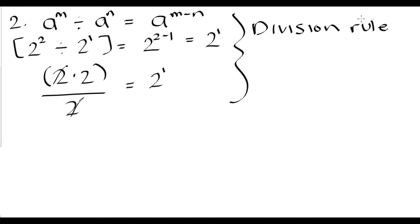Like the multiplication rule, the division rule is only going to hold when we have a common base. So when we have a to the power of m divided by a to the power of n, this would not work if we had a to the power of m divided by b to the power of n, or 2 to the second power divided by 3 to the first power.